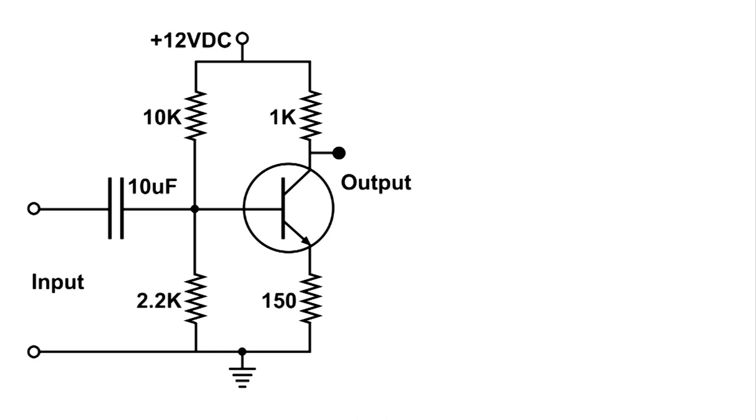The 10k and the 2.2k ohm resistors to bias the base of that NPN transistor. Now the input for the audio is going to come through that 10 microfarad capacitor and ground.